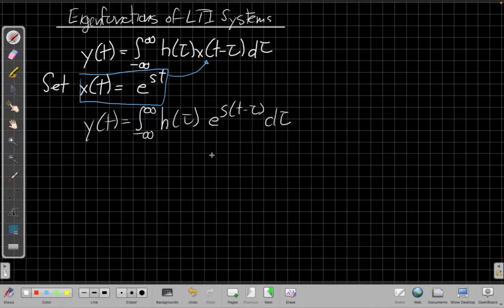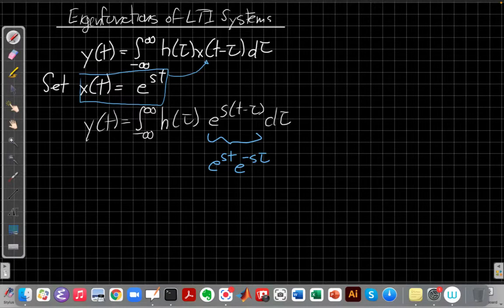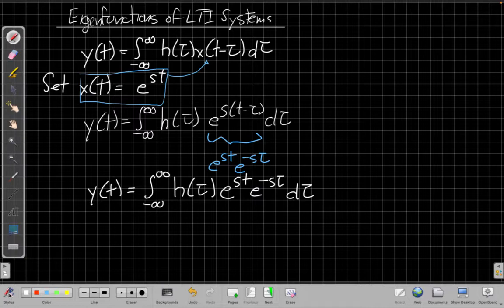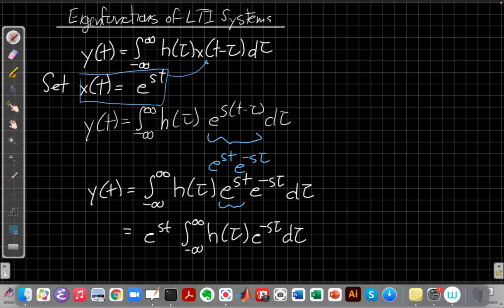And so looking at this we can say, well I can use properties of exponentials to rewrite that e to the st as a product of e to the st times e to the minus s tau as a product of two exponentials. So let me use this and rewrite the integral using that product. And when I do that I can now look at this and say, you know this first e to the st here, this term doesn't depend on tau so I can bring it outside the integral.